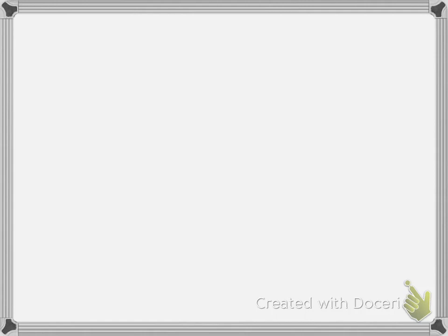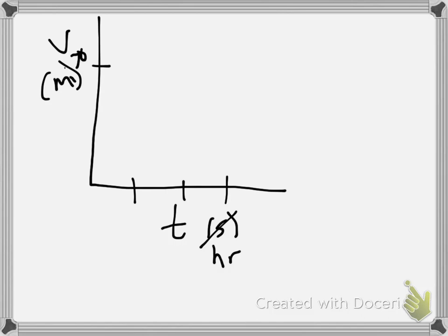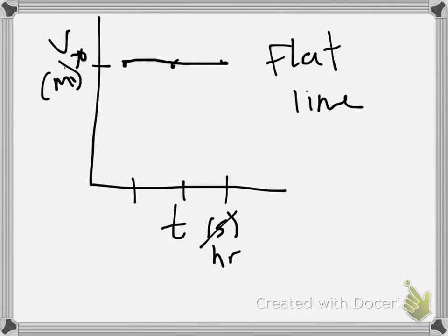If we take a look at the graph of something like this, let's start with velocity versus time. We've got time measured in hours, and velocity measured in miles. We've got 70 up here. At the first hour it was here, the second hour it was still up at 70, and the third hour it's still at 70. If we connect the dots, we get a very flat line. That's what constant velocity shows on a velocity versus time graph — it's a flat line.